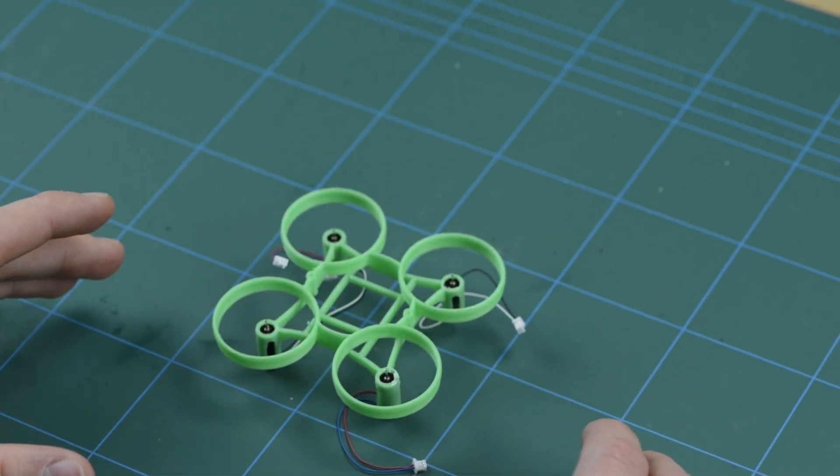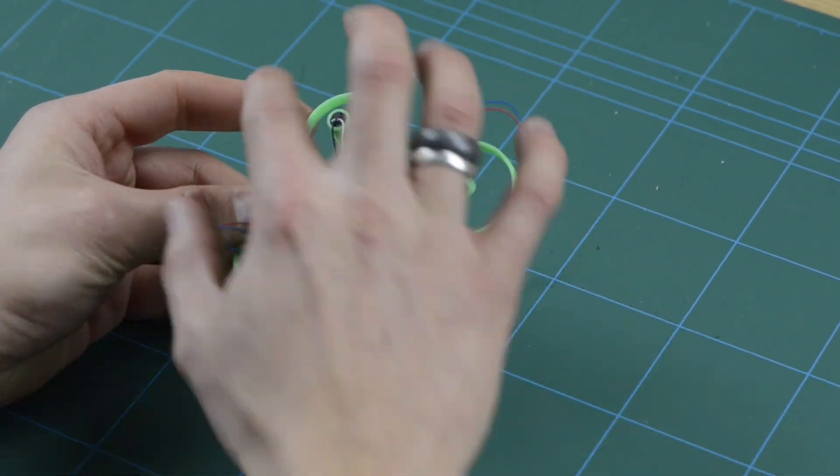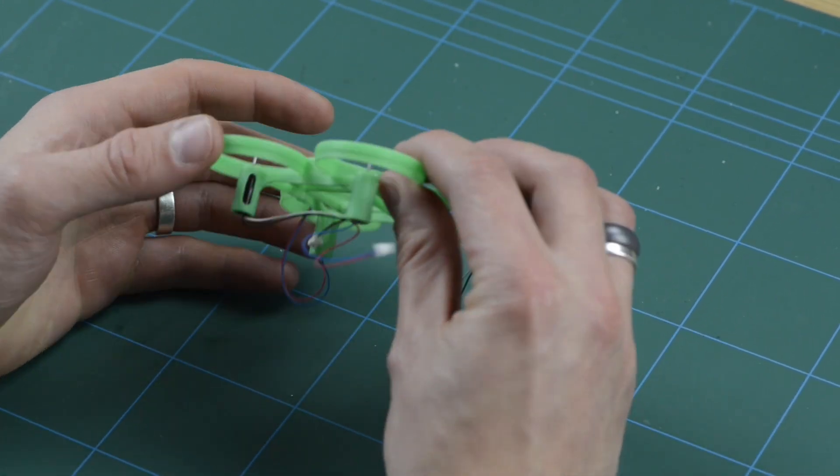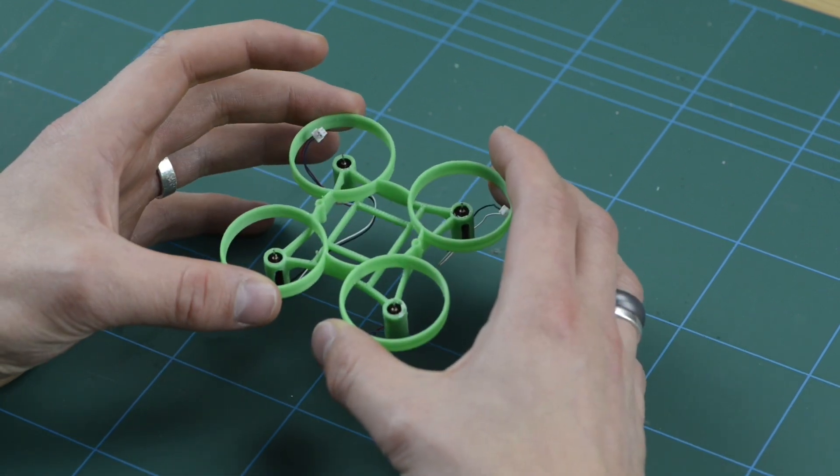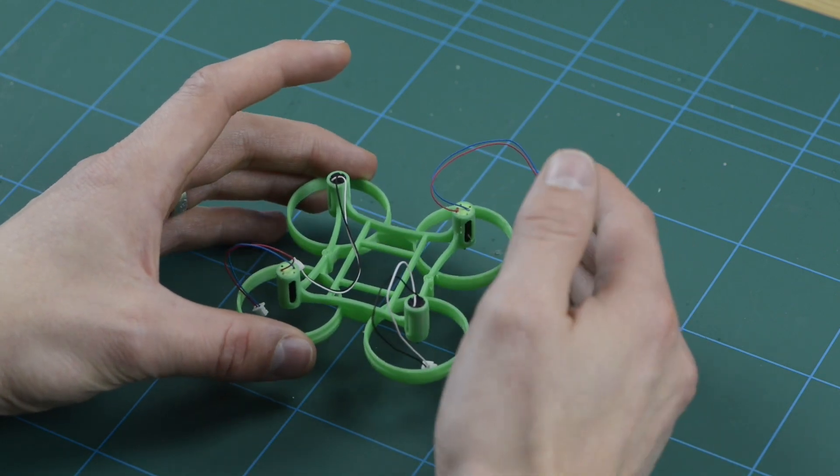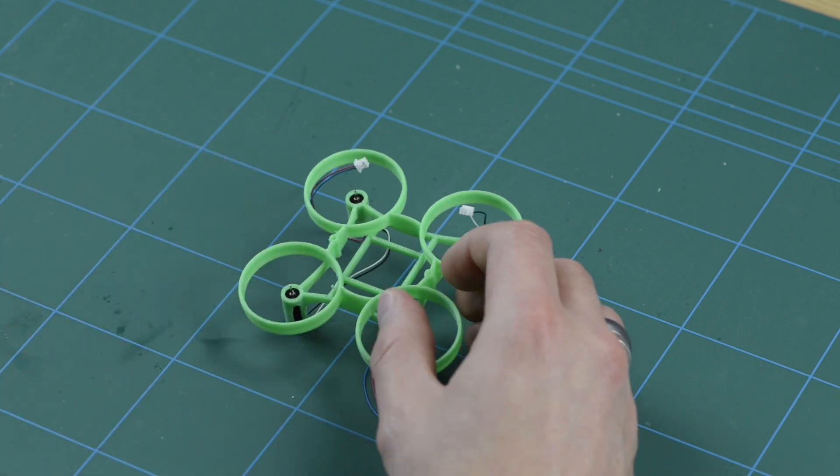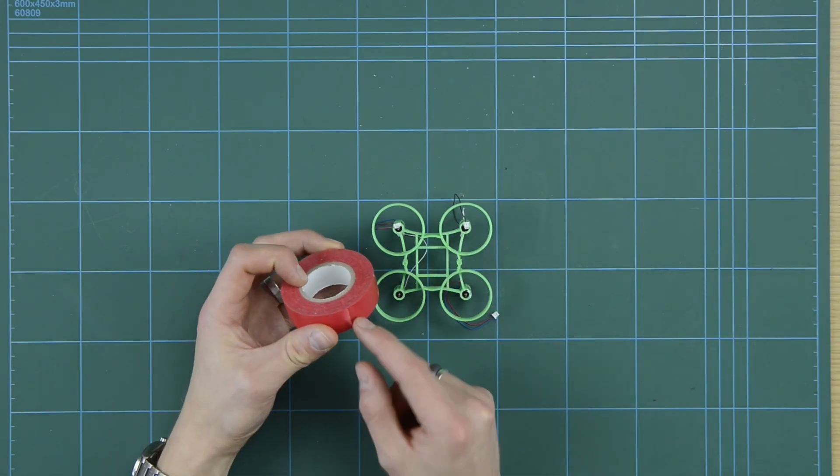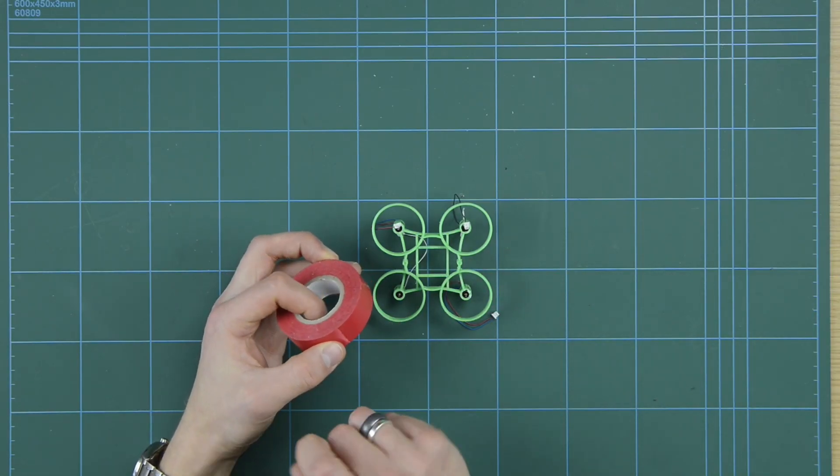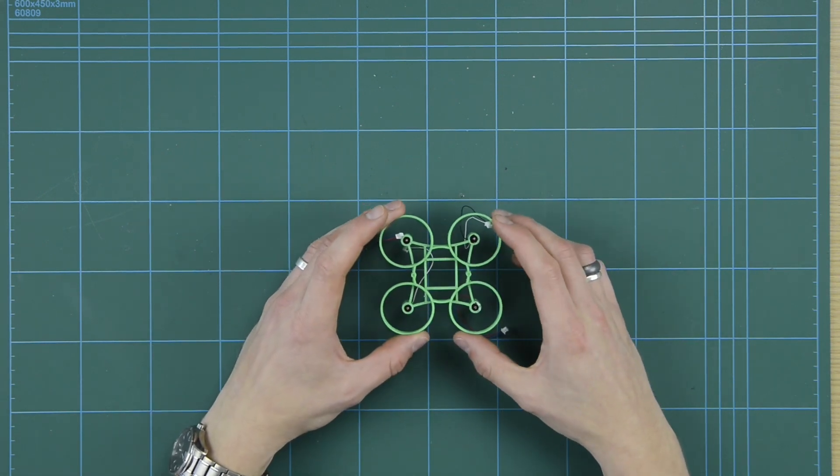And the motors should retain themselves. They should be quite stiff in the frame. And how stiff they are will really depend on the quality of the 3D print and the tolerance of the 3D printer that you're using. The frame has been designed so that they should be a tight push fit. If they're ever so slightly loose, you can wrap a very small piece of electrical tape very tightly around the motor before you push it in to retain them.